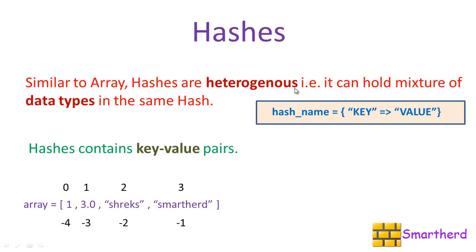This is the syntax of defining a hash. This is a variable name hash_name equal to curly braces, then this is a key and this is a symbol equal to greater than, then it is a value. These are the values, and in arrays we have the 0, 1, 2, 3 as keys. This index in arrays is known as keys in hashes.